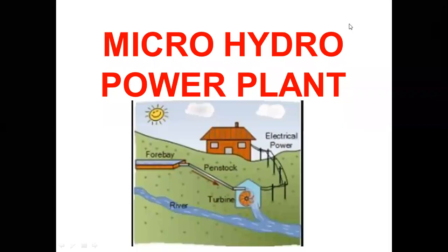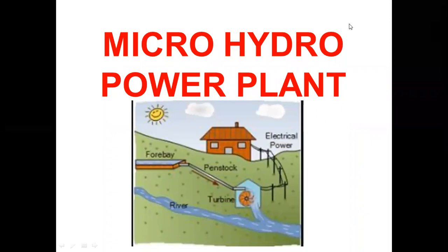Good morning students. Today's topic is the micro hydro power plant. As the name suggests, it is a miniature or micro form of a hydro power plant. Here we also use water power to generate electricity. A micro hydro power plant has an output ranging from 5 to 100 kilowatts, which is why we call it micro. We use either a flowing stream or water flow for generation of electricity.